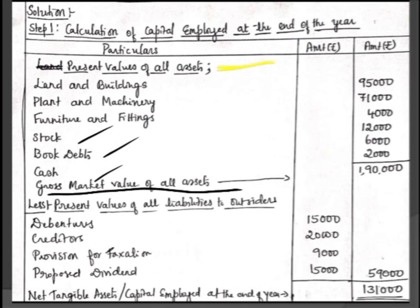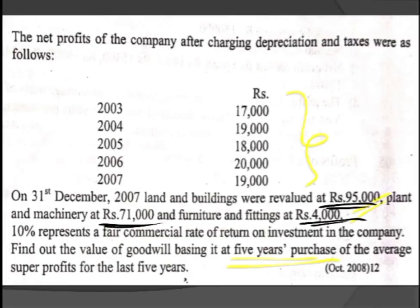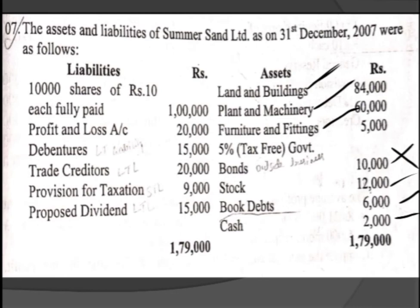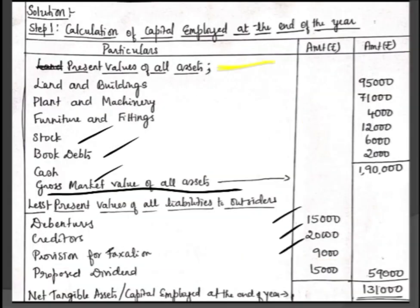Deduct present values of outside liabilities: debentures (long-term), trade creditors, provision for taxation, and proposed dividend (all at book value since no present value given). Share capital and profit and loss account are not outside liabilities and are excluded. Total liabilities = Rs 59,000. Net tangible assets = Rs 1,90,000 − Rs 59,000 = Rs 1,31,000. This is the capital employed at the end of the year.